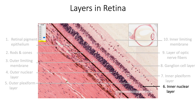The inner nuclear layer contains the cell bodies of bipolar cells, horizontal cells, interplexiform cells, amacrine cells, and Müller cells. In the inner plexiform layer, axons of the bipolar cells synapse with dendrites of ganglion cells, along with processes of amacrine cells. Müller cell processes pass through this layer as well.